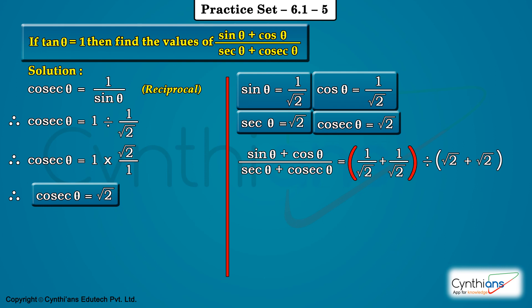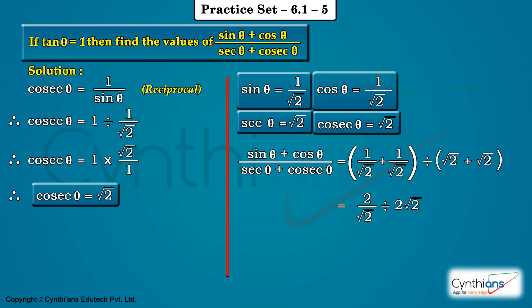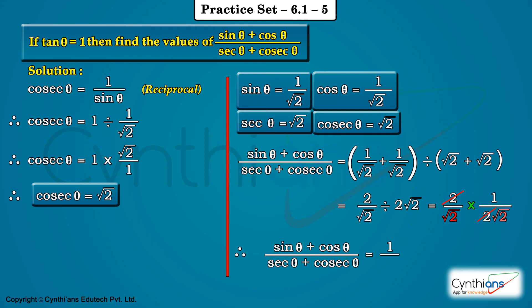The denominators in the first bracket are the same, so adding numerators: 1 plus 1 upon root 2 gives 2 upon root 2. The denominator becomes root 2 plus root 2, which is 2 root 2. Division becomes multiplication by the reciprocal: 2 upon root 2 multiplied by 1 upon 2 root 2. The 2s cancel, giving 1 upon root 2 times root 2, which is 1 upon 2. That is the final answer.